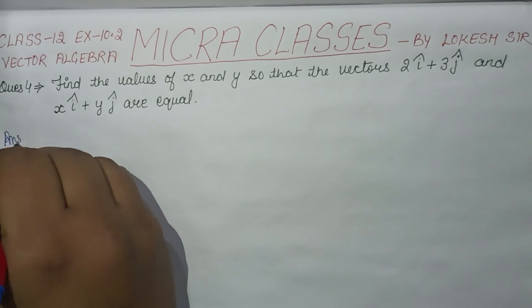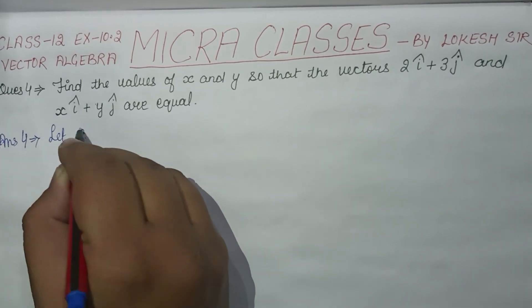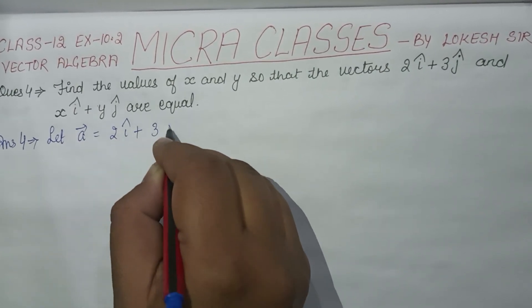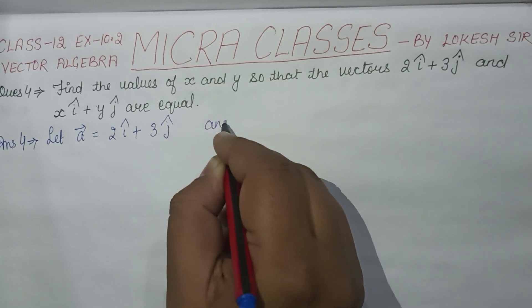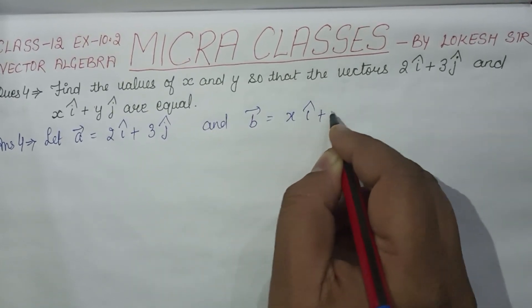Let vector A equal 2i cap plus 3j cap and vector B equal x i cap plus y j cap.